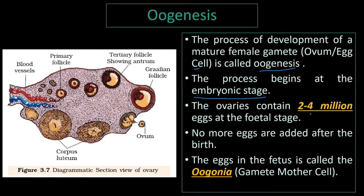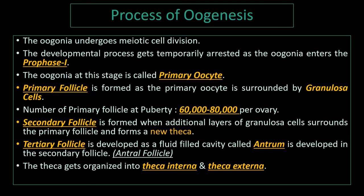The ovary contains around 2 to 4 million immature eggs at the fetal stage, and no more eggs are added after birth. The egg in the fetus is called the oogonium, and that is the gamete mother cell. The oogonium undergoes meiotic cell division, and during prophase 1 of meiosis 1, the developmental process is temporarily arrested. At this arrested stage, the oogonium is called the primary oocyte.